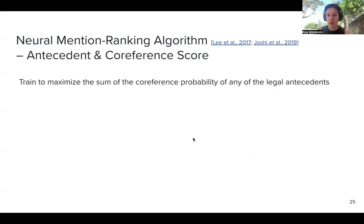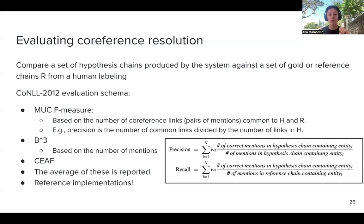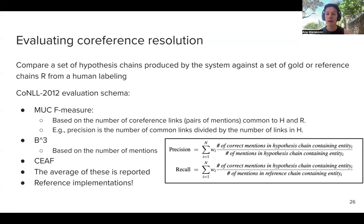Now I want to mention how we evaluate co-reference resolution. We will have a set of evaluation measurements. We need human annotated data where human annotators have said these are the true mentions and these are the co-reference links between them. Whatever our model produces is called the hypothesis chain. The gold chains, produced by human annotators, are called reference chains.